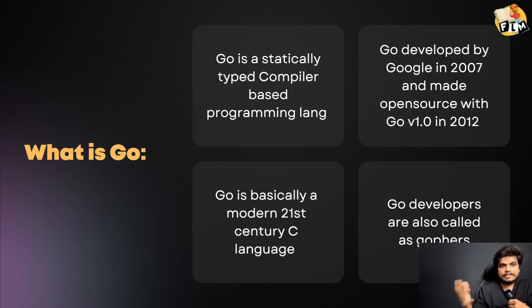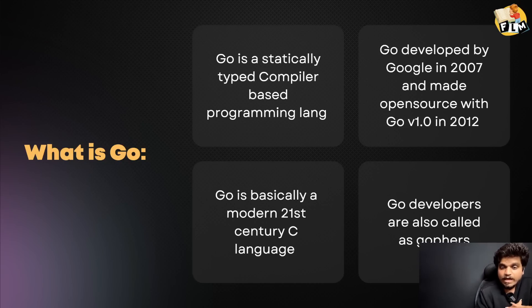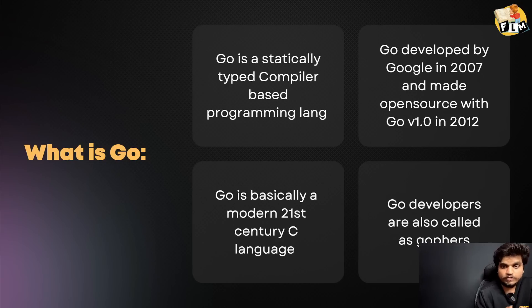In Go, when you compile the code, it can be directly executed as machine code. Go is developed by Google in 2007, and made open source with Go version 1.0 in 2012.